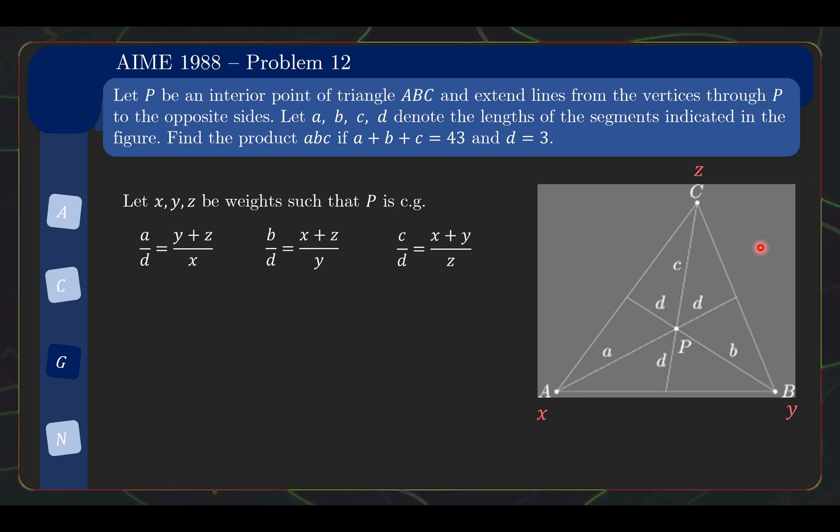Similarly, if we put a rod parallel to AC underneath it, then we will have B over D is equal to X plus Z, the weights here, over the weight here Y. And lastly, if you put a rod parallel to BC beneath here, then A over D equals Z plus Y over X. What I've just done is I've managed to convert information about the ratio lengths inside into information about ratio of the weights.